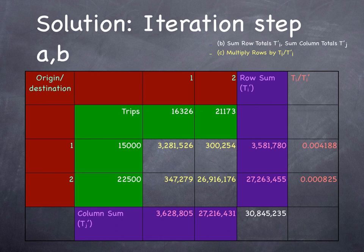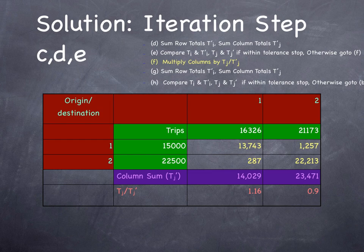Similarly, in the second row for origin zone 2, we have 347,000 trips. We have almost 27 million for cell 2,2, adding up to 27.3 million. Looking at the ratio of 22,500 to 27,263,455 gives us 0.000825. We multiply values in cell 2,1 and cell 2,2 by 0.000825, and our total will be 22,500. Great!